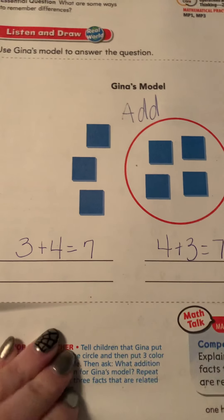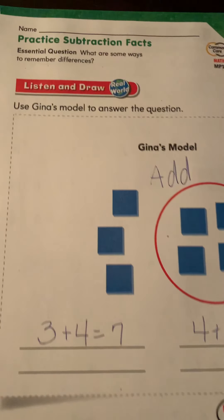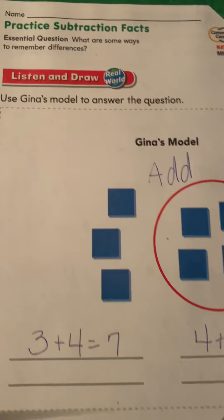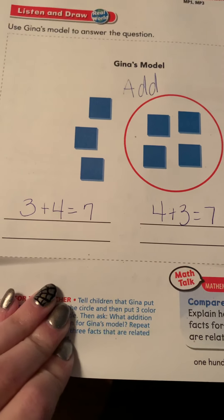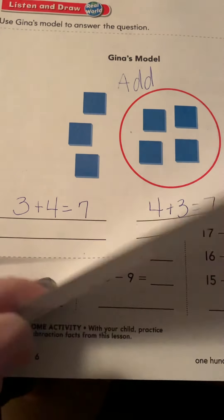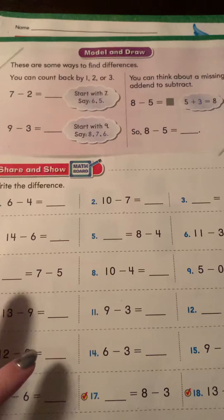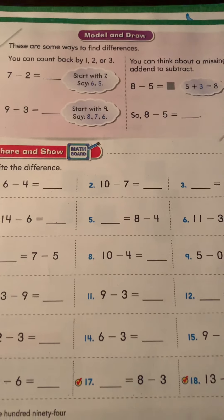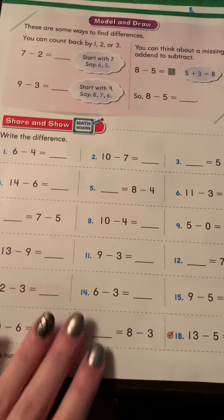Now we're going to talk about something related to adding because our I can statement says, what are some ways to remember differences? We're going to talk about that when we flip the page. So peel back this one page, peel it like a banana and just look at the back of this first page. You should see a purple box. I'm on the purple box.